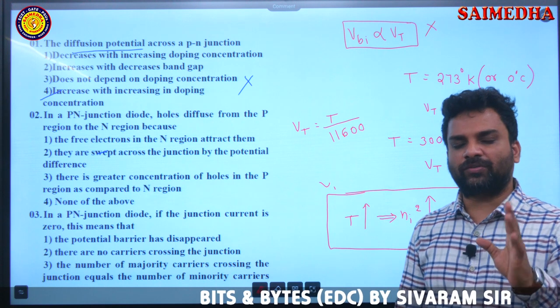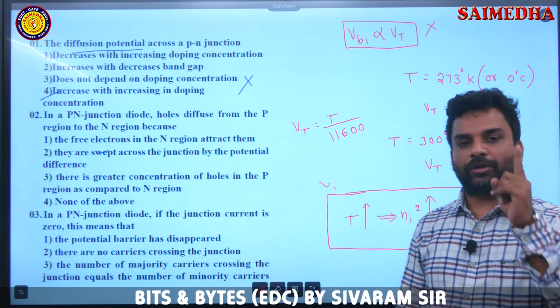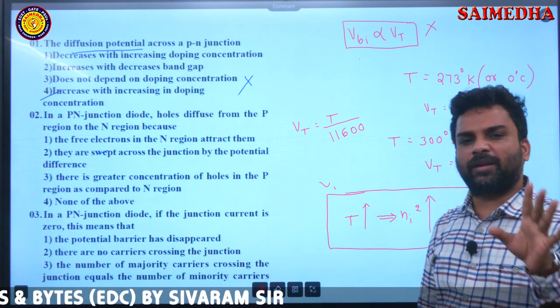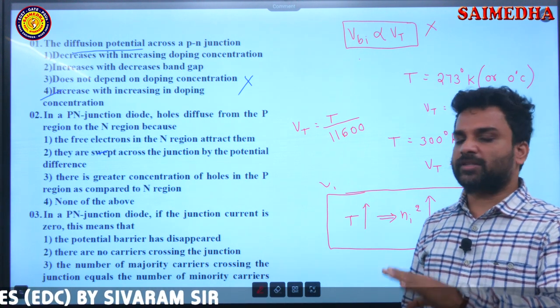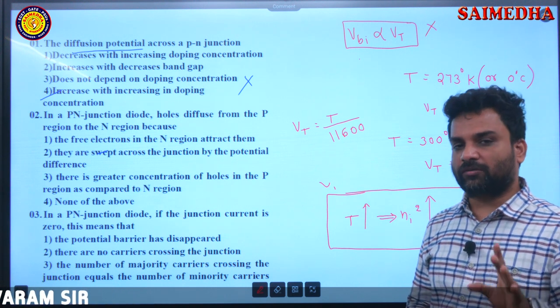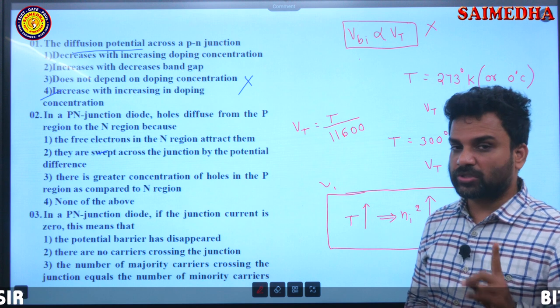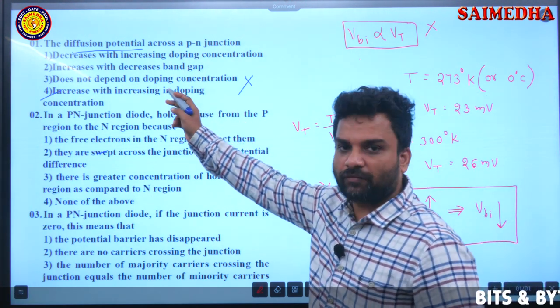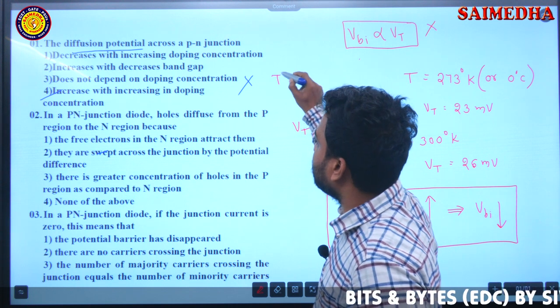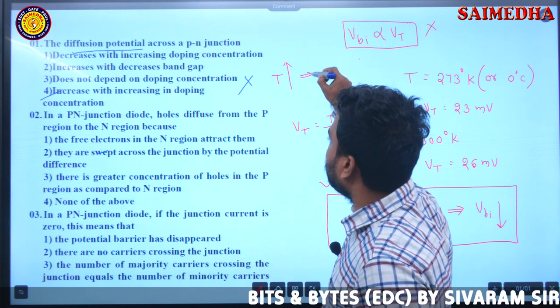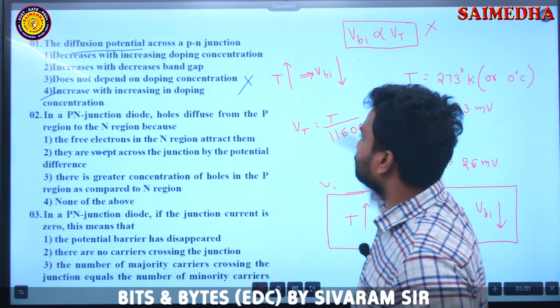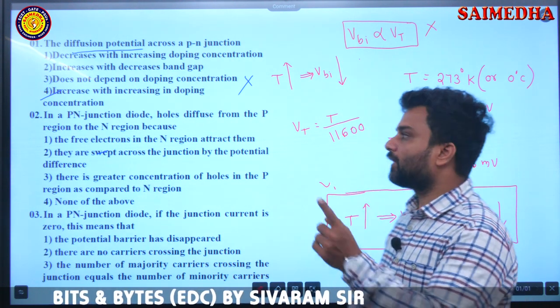So it is a weak function of temperature, hence we don't take VT, we won't take this one. Always we will take Ni square only. So remember students, from this question we learnt one point, that as temperature increases VBI value decreases. Now next question.